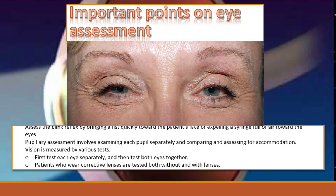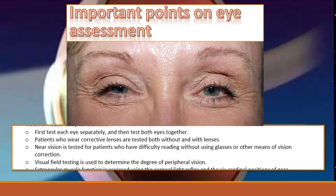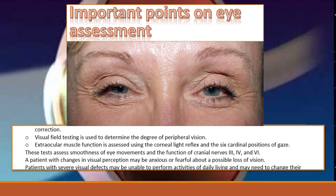Pupillary assessment involves examining each pupil separately, comparing them, and assessing for accommodation. You can measure vision by several tests — test each eye separately and then both eyes together. Patients who wear corrective lenses are tested both with and without the lenses. Near vision is tested for patients who have difficulty reading without glasses or other vision correction. Visual field testing is used to determine the degree of peripheral vision, and extraocular muscle function is assessed using the corneal reflex and the six cardinal positions of gaze.